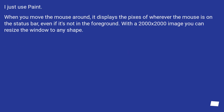I just use Paint. When you move the mouse around, it displays the pixels of wherever the mouse is on the status bar, even if it's not in the foreground. With a 2000x2000 image you can resize the window to any shape.